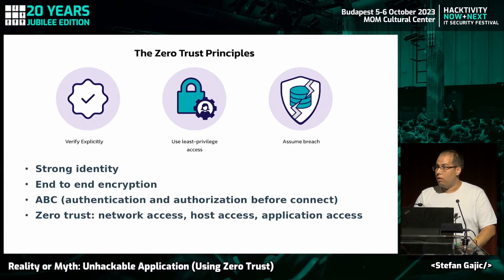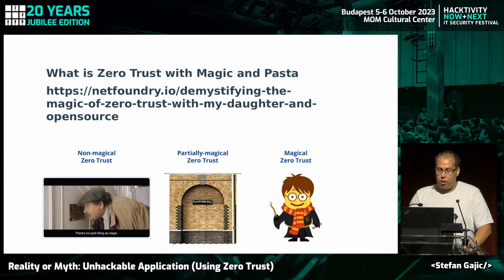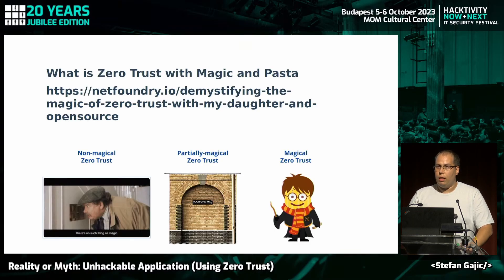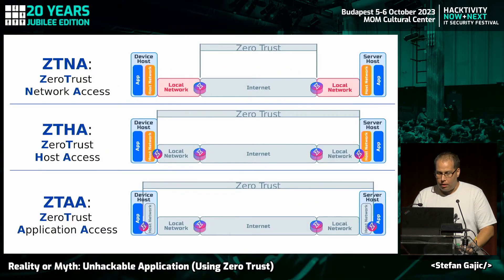We will mostly talk about application access during this presentation. A colleague of mine made an awesome comparison with Harry Potter — you can find the link there. Basically, most solutions for zero trust networking nowadays are non-magical zero trust — they're open to the internet and open to IPs. There are some partially magical zero trust solutions that give invisibility. The magical zero trust goes to the application level, and this little guy — like Harry Potter — is called Ziggy. That's a piece of pasta; ziti. I also have it on my t-shirt right here as a ninja.